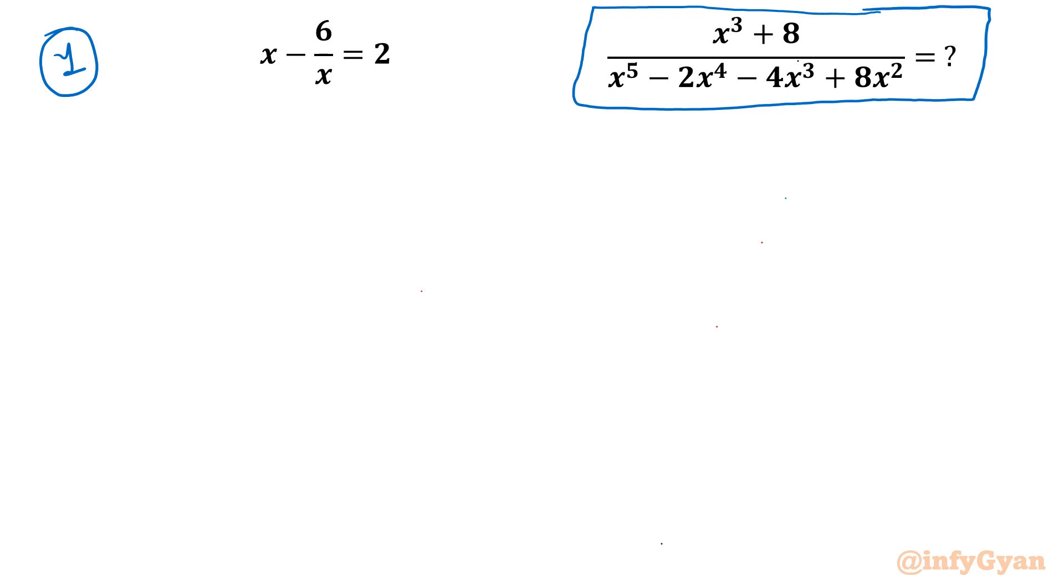So let's multiply the given equation with x on both sides and by considering that x cannot be 0 as it is in the denominator. Let's expand. So I will write x square minus 6 equal to 2x or x square minus 2x minus 6 equal to 0 or if required then x square minus 2x is equal to 6.